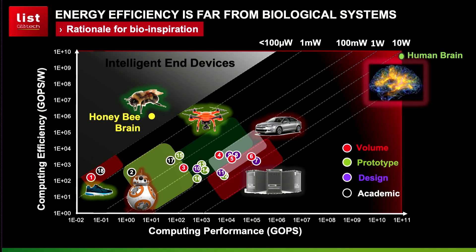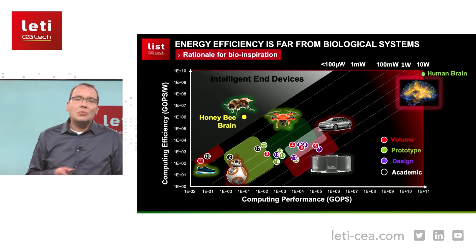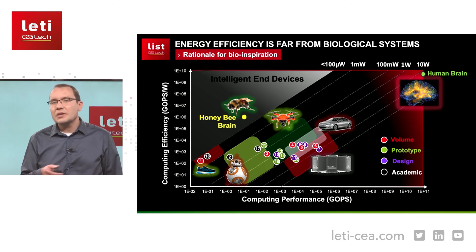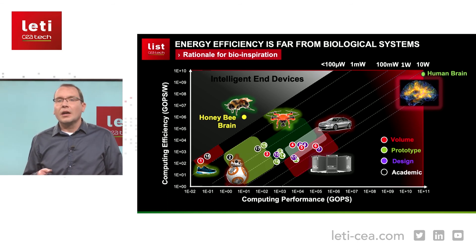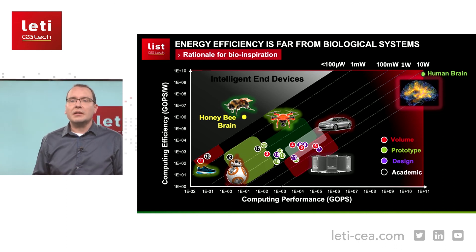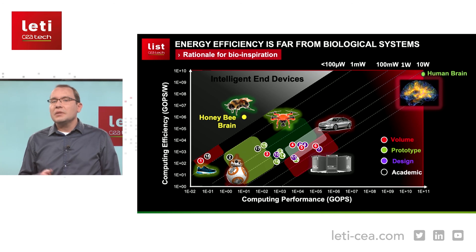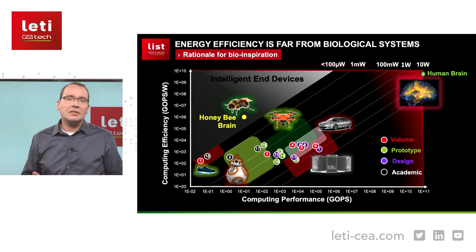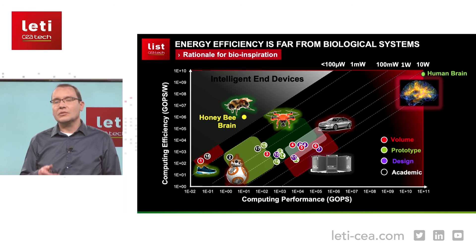However, when we compare what engineers can achieve with current silicon implementations and what Nature is achieving, it's easy to realize there is still room for improvement. This graph shows the energy efficiency versus the raw compute power of several implementations coming from academic research teams, startups, and large companies. The energy efficiency peaks at several dozen TOPS per watt, which is estimated to be two orders of magnitude below that of the bee brain and six orders of magnitude below that of the human brain.